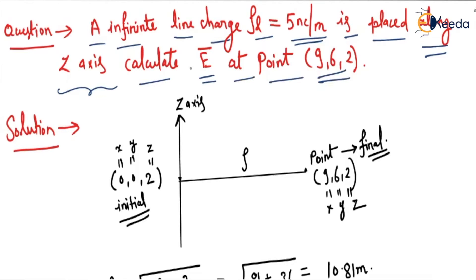So this is the numerical. Infinite line charge is given for which rho_L equals 5 nanocoulombs per meter, and it is placed along the z-axis. We have to calculate the electric field at (9, 6, 2).